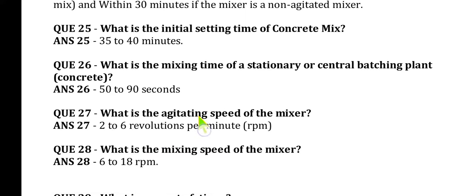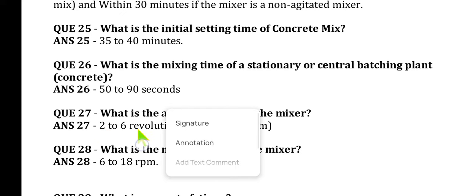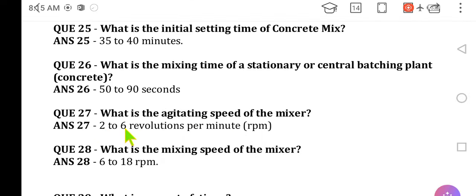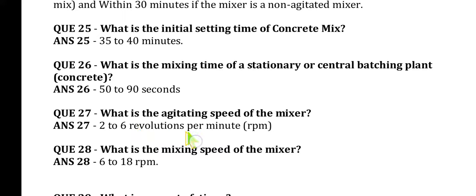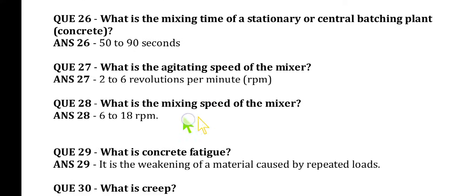Question 27: What is the agitating speed of the mixer? The agitating speed of the mixer is 2 to 6 revolutions per minute (RPM). This point should be noted. Question 28: What is the mixing speed of mixers? The answer is 6 to 18 RPM.